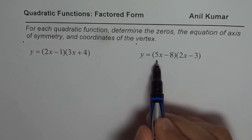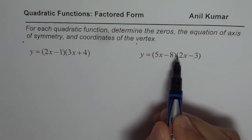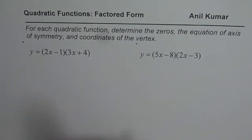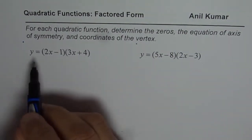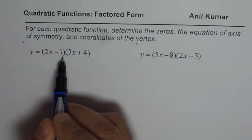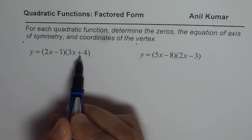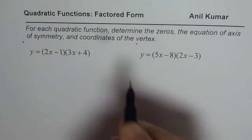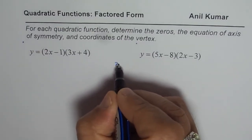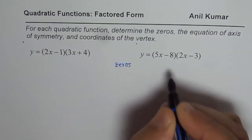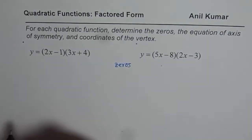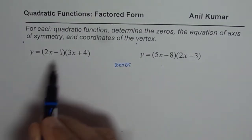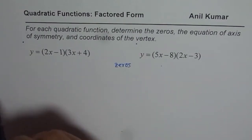The other one is y equals to 5x minus 8 times 2x minus 3. So let me do the very first one, which is y equals to 2x minus 1 times 3x plus 4. We need to find a couple of things here. First is the zeros. So let us see how to find zeros. Zeros means each factor should be 0 — then only you get y equals to 0.